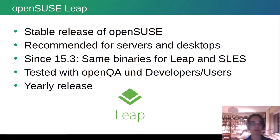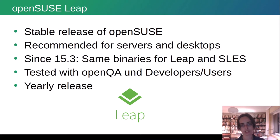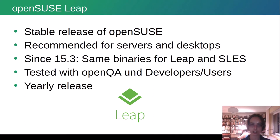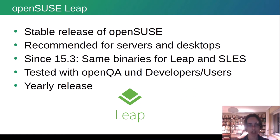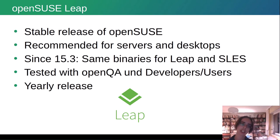Besides our rolling release, we also provide a stable release called OpenSUSE Leap. A stable release is released yearly and is recommended for servers and desktops. Since our last version 15.3, our binaries are compatible with SLES — we are using the same packages as SUSE for OpenSUSE Leap. It is tested with OpenQA and additionally by our developers and users. It is more stabilized and more equal to a default stable release.